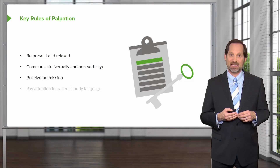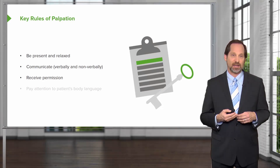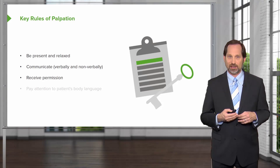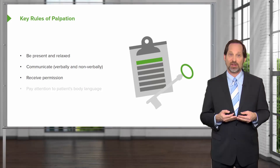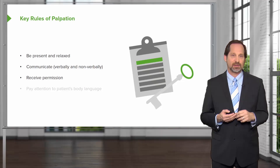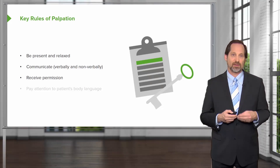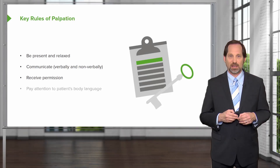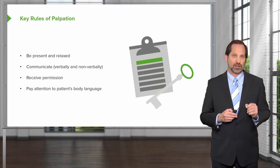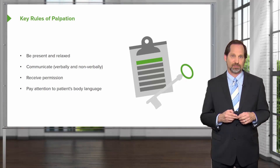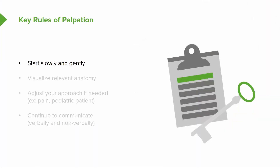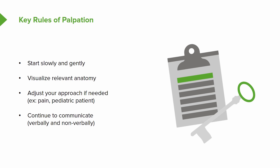Receive permission from the patient. Some patients may have had past experiences or feelings about medical care that differ — they may not want to be touched, or not extensively. You need to communicate about why you need certain areas exposed, why a hat or clothes might need to come off. Then you can negotiate and figure out what they're comfortable with versus what you feel is the best way to get information. Pay attention to the patient's body language — notice when they're uncomfortable. Make sure this is concise, medical, and with purpose. Start slowly and gently, visualize the relevant anatomy, and adjust your approach based on the patient's response. Continue to communicate what you're feeling, what you're learning, and why you continue to palpate.